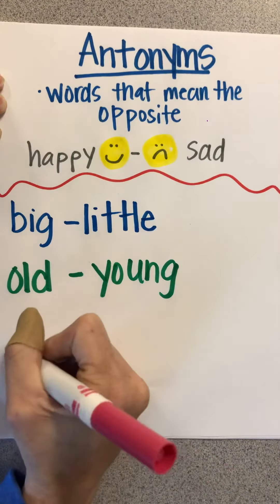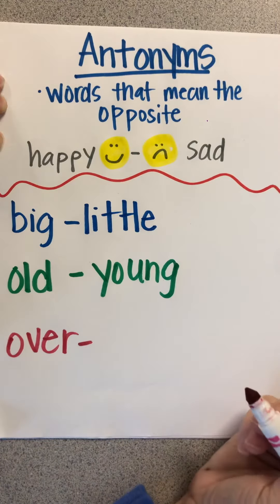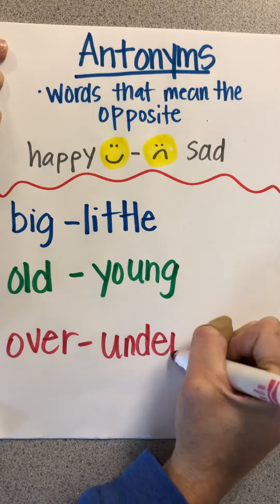What's the opposite of over? You go over something or you can go under something.